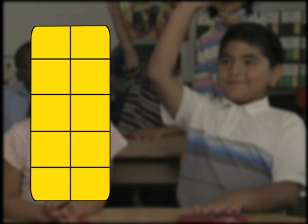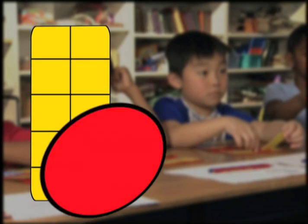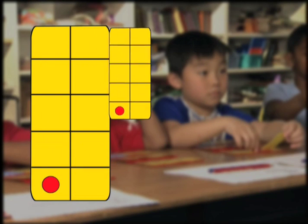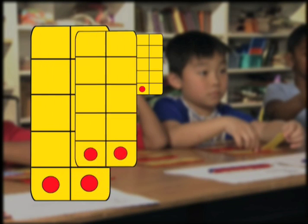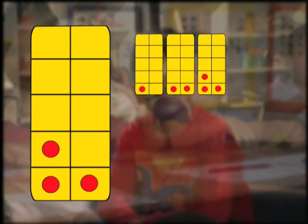Children clearly see a group of ten — ten boxes. As children count, they see how each number relates to ten. This builds strong foundations for place value.